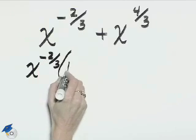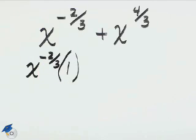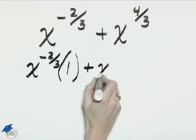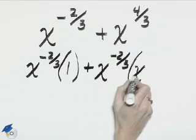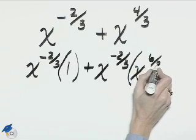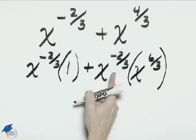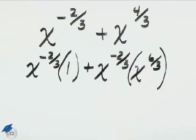That will give us x to the negative 2 thirds times 1 for the first term plus x to the negative 2 thirds times x to the positive 6 thirds for the second term. Negative 2 thirds plus 6 thirds is 4 thirds.